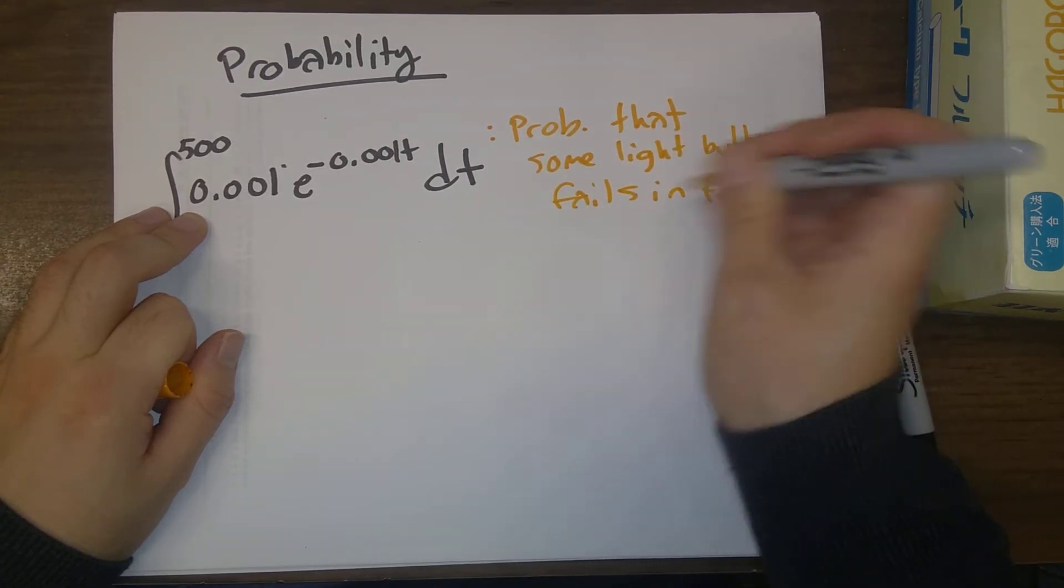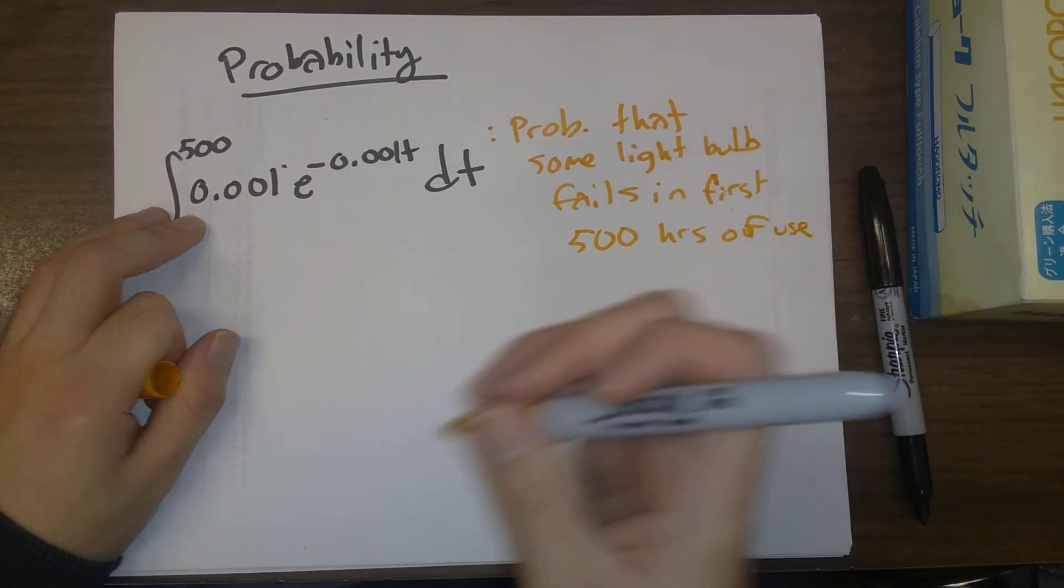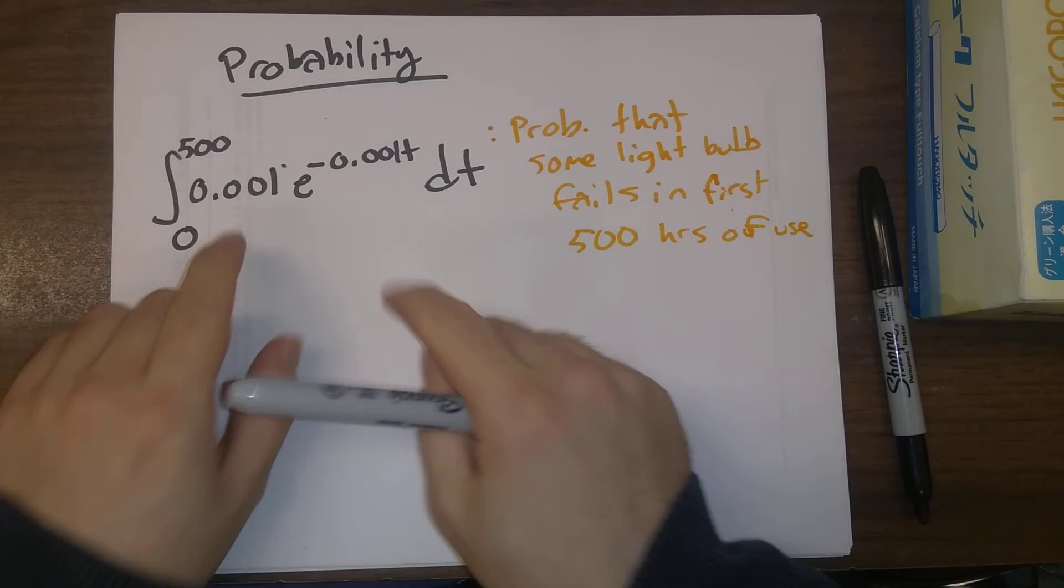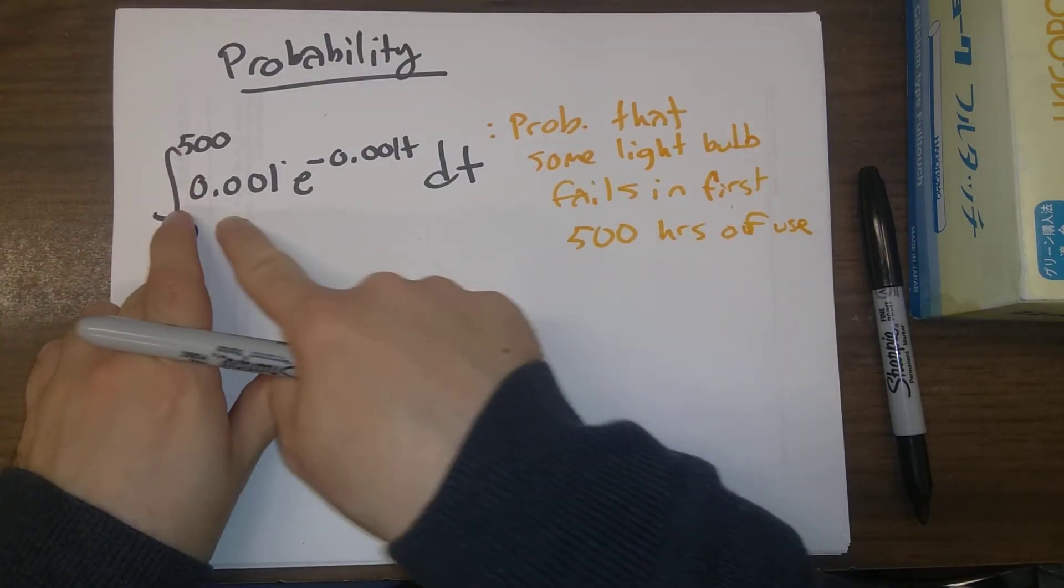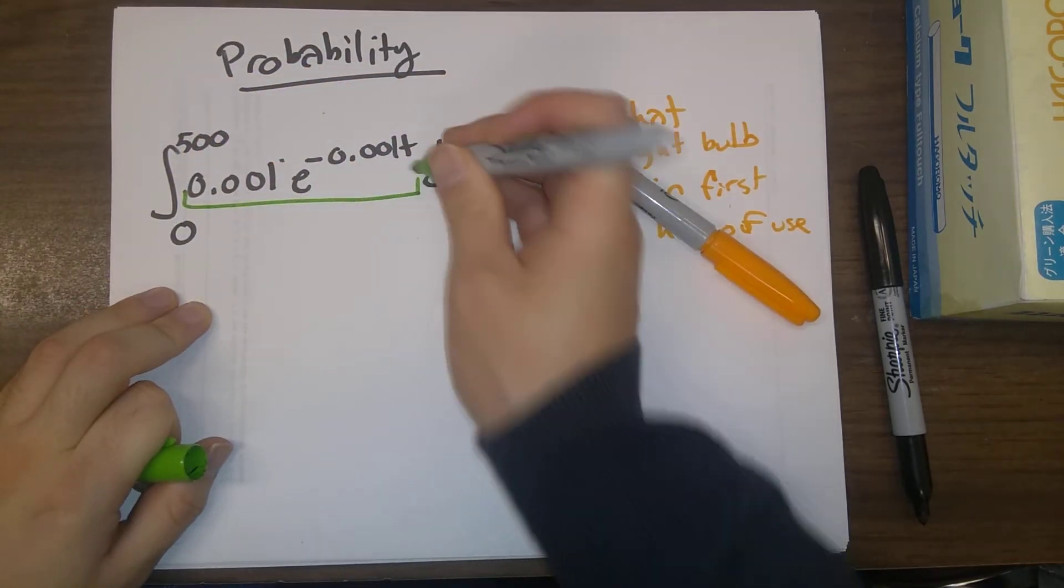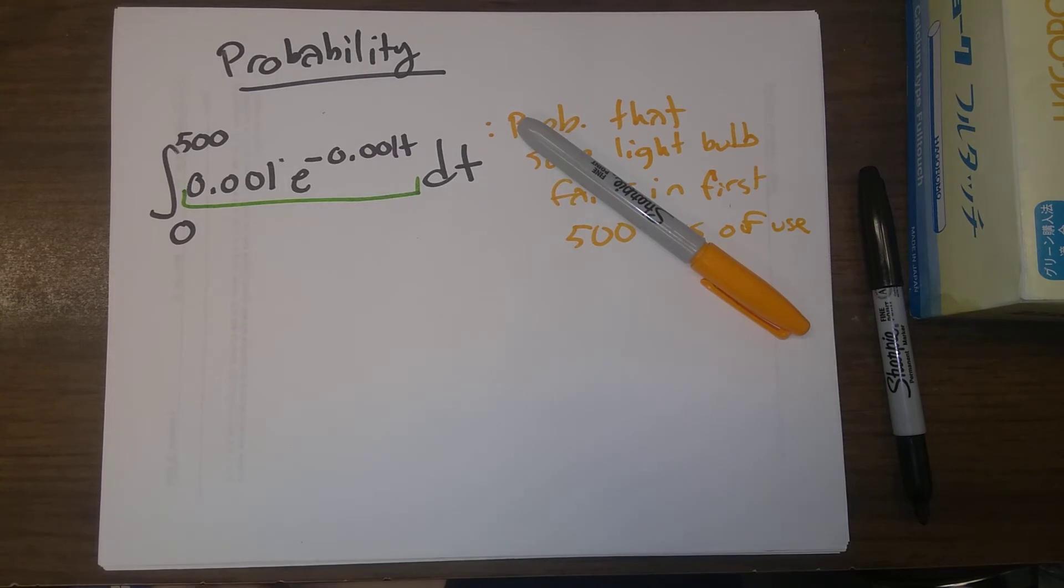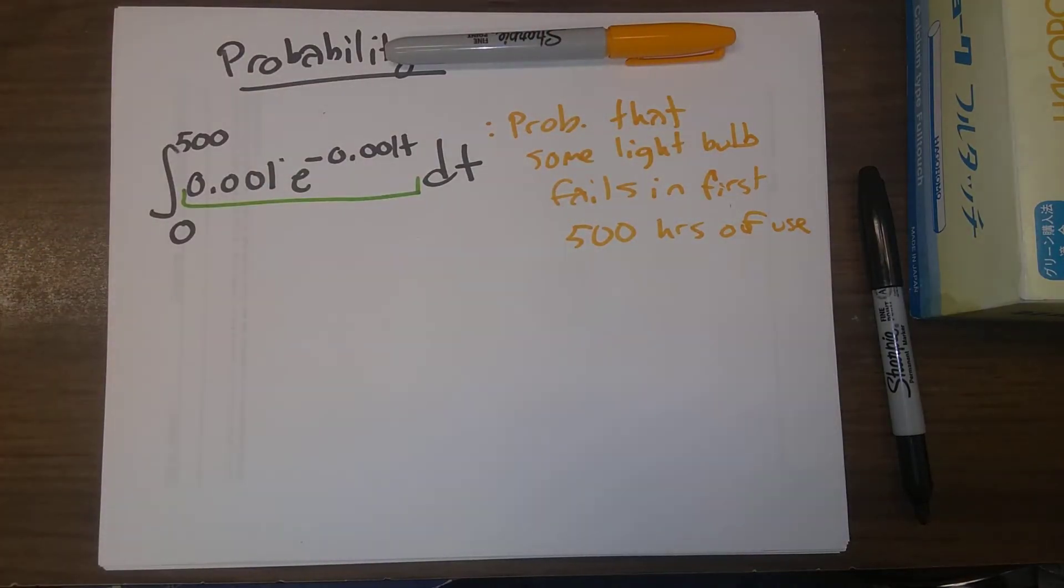So basically what's going on here is this function here, the function that we're integrating, is called a probability density function. And integrating this function over some range of values gives you the likelihood that a light bulb, or whatever it is that you're working with, will fail in that time span.